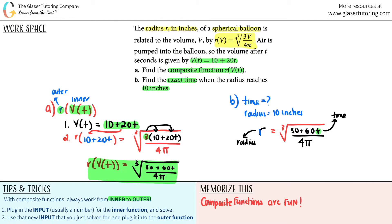It's definitely going here because 10 inches, that's an r value. It said when the radius reaches this. So I'm going to say this is 10 equals the cubed root of 30 plus 60t all over 4π.